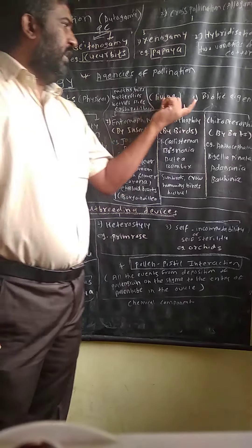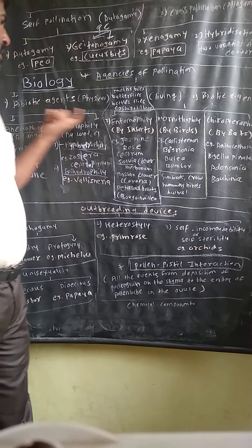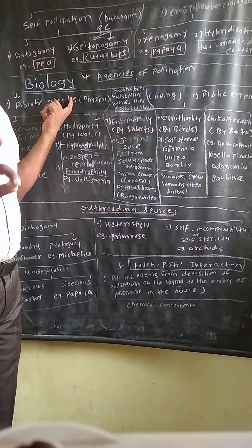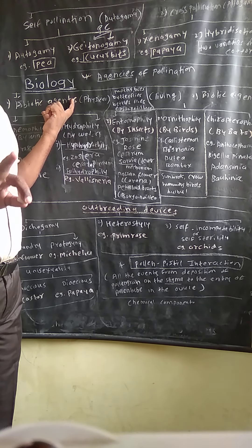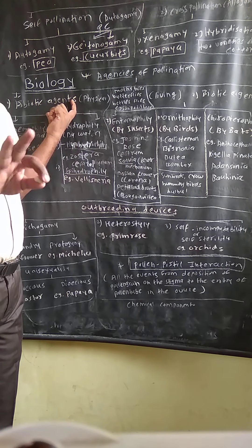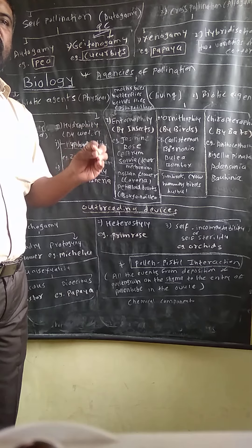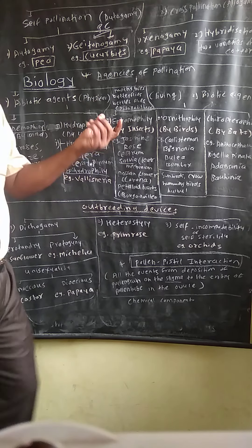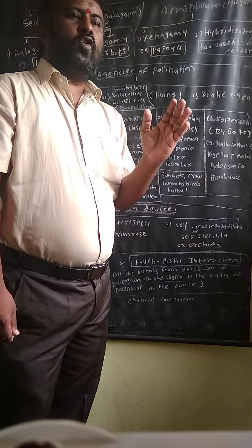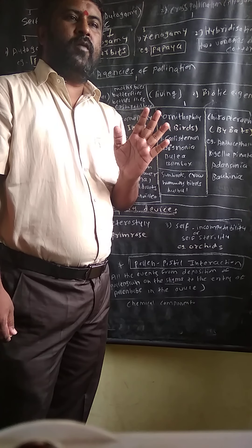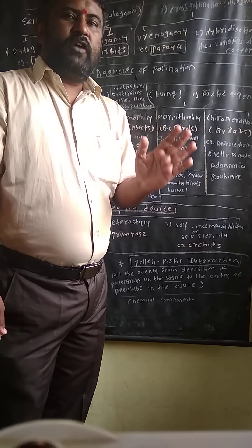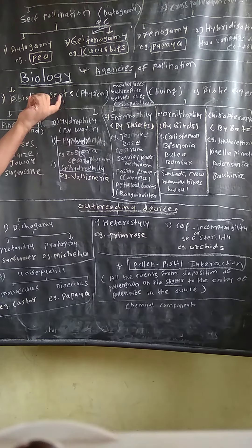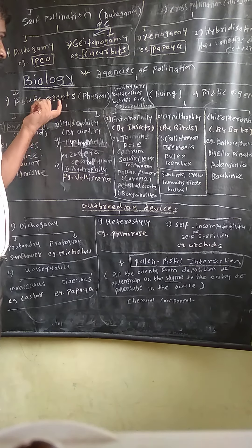There are two different types of agencies of pollination. First is the abiotic agent and second is the biotic agent. Abiotic means those agencies which are physical. Biotic agent means those agencies which are living organisms.